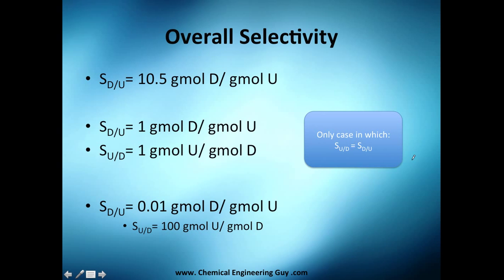Here are some examples. The standard nomenclature is desired product over undesired product. If I tell you I have a selectivity of 10.5, that means I'm producing 10.5 moles of my desired product versus 1 mole of undesired product. Now what happens if selectivity equals 1? I have 1 gram mole of desired product versus 1 gram mole of undesired product.